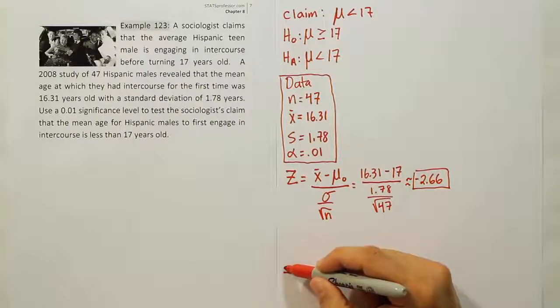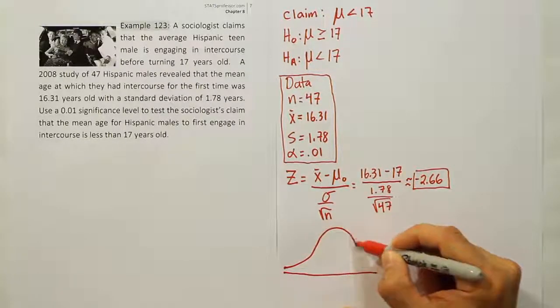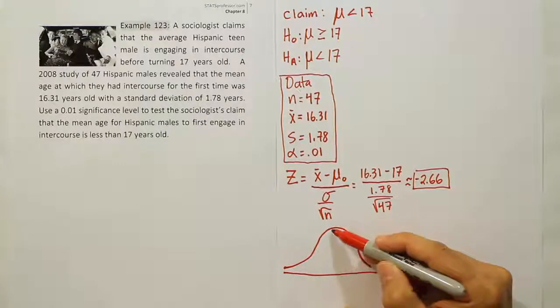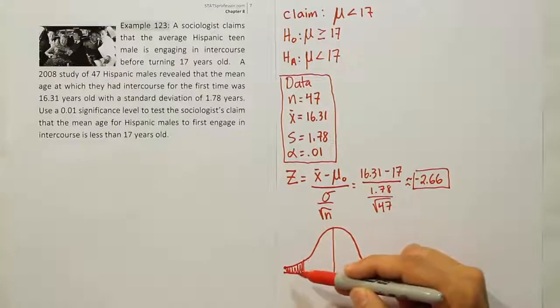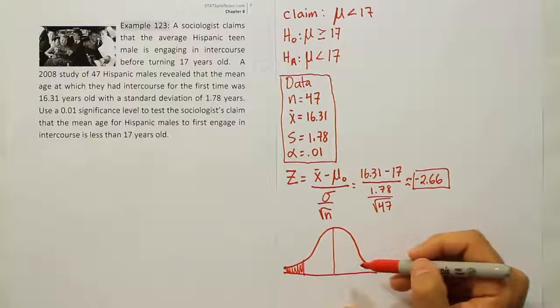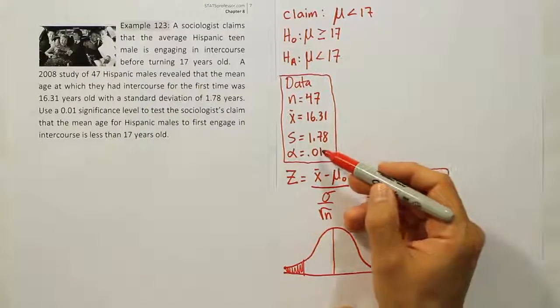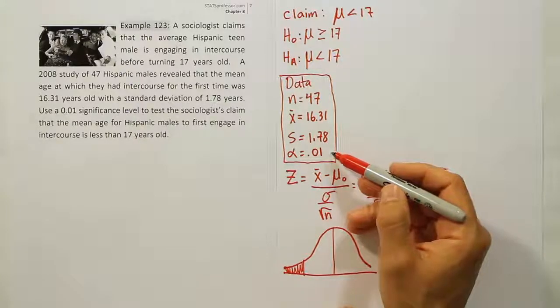So let's draw a bell curve. And then we'll shade a left tail for that bell curve. And that will be our rejection region. Now we need to know what area is going to be in that tail. It's going to be the same as alpha in this case because it's a one-tailed test.